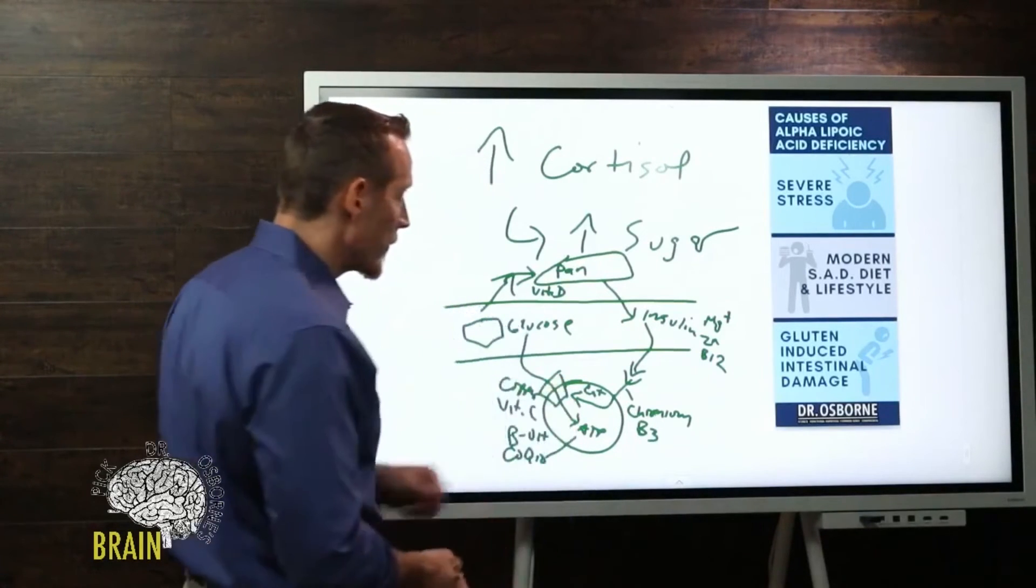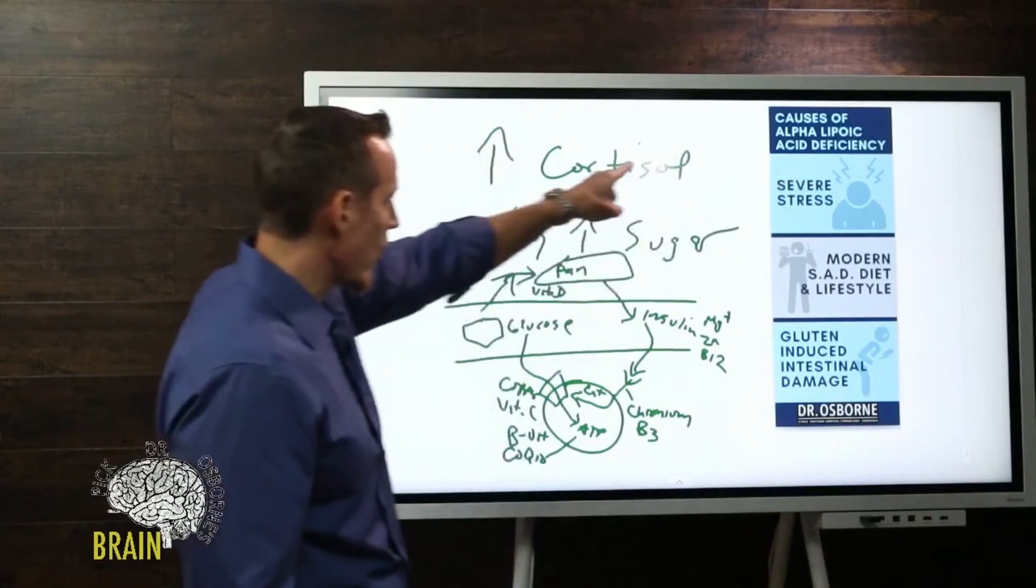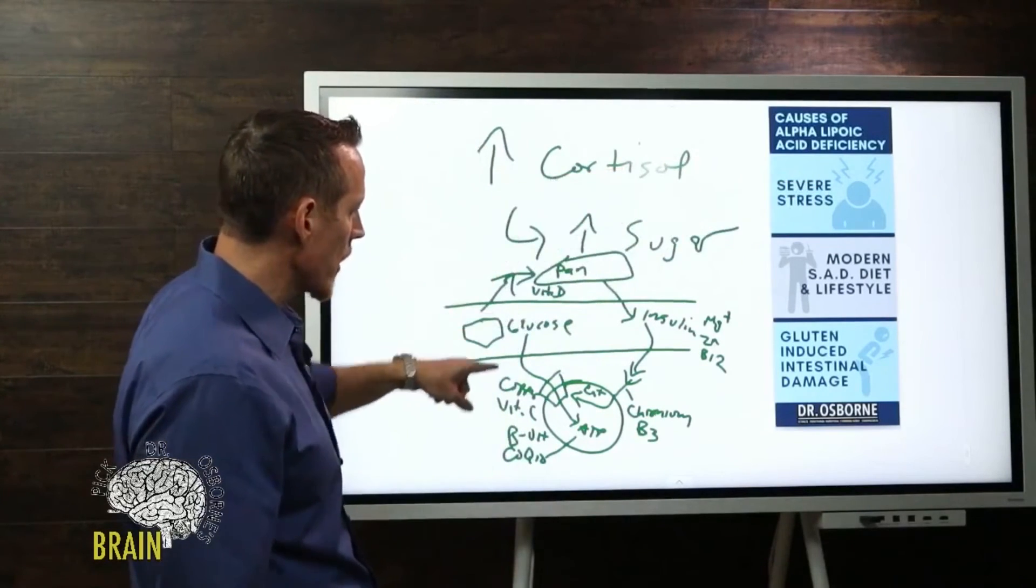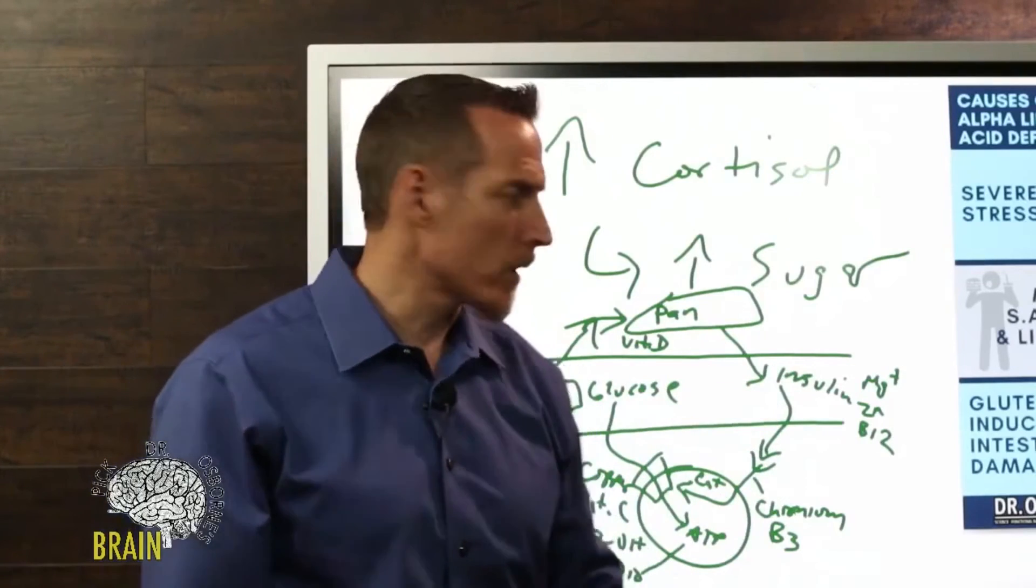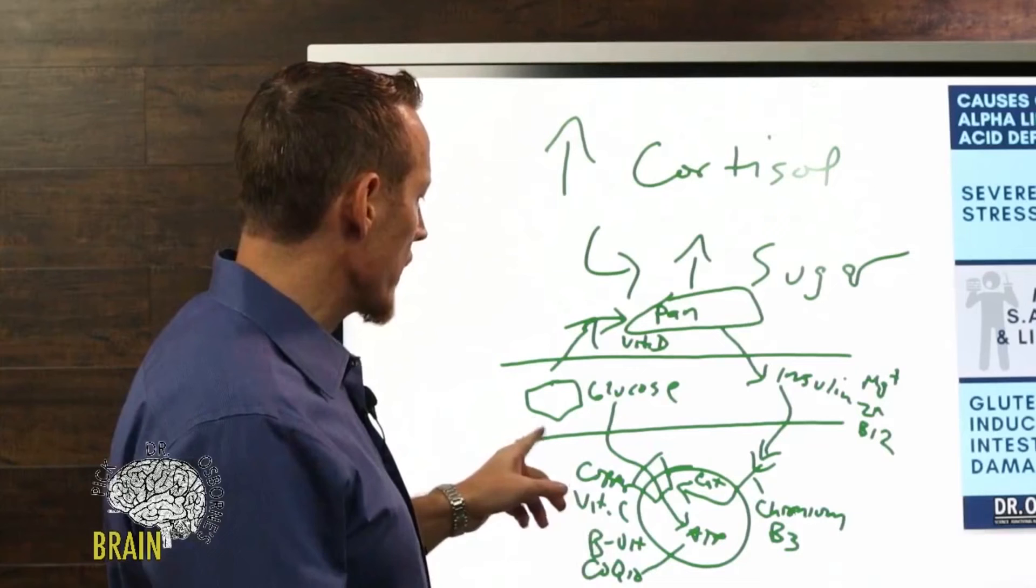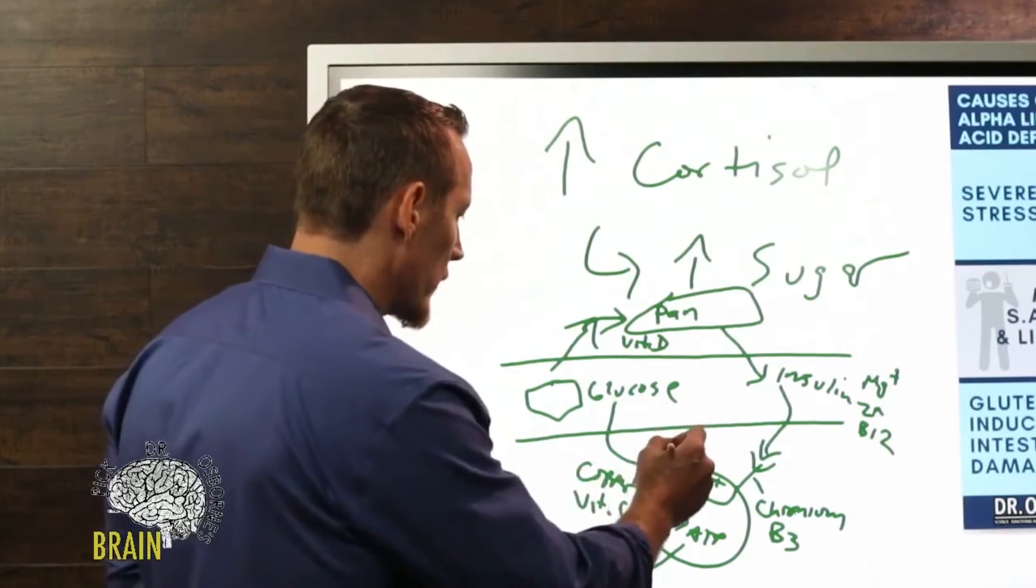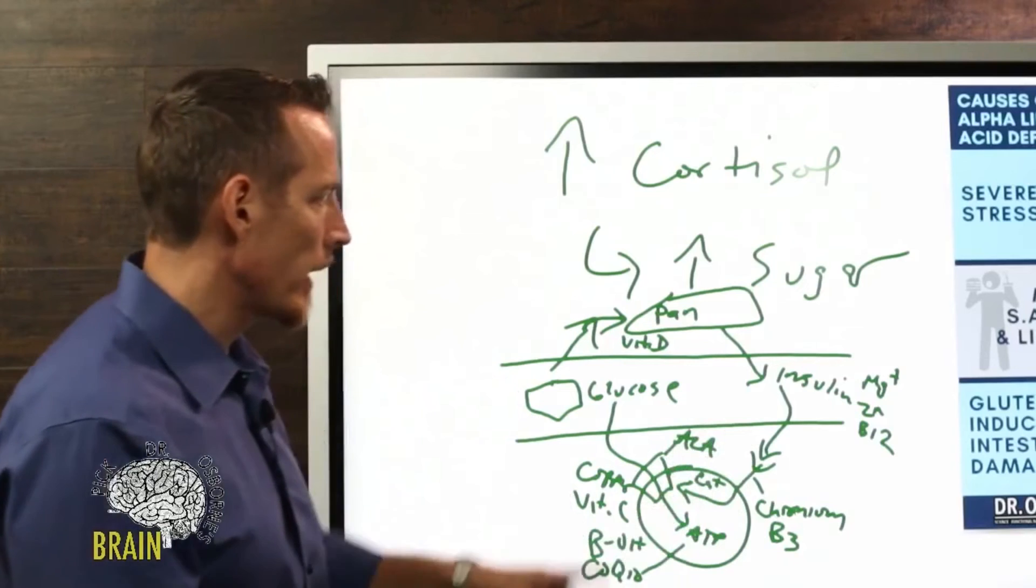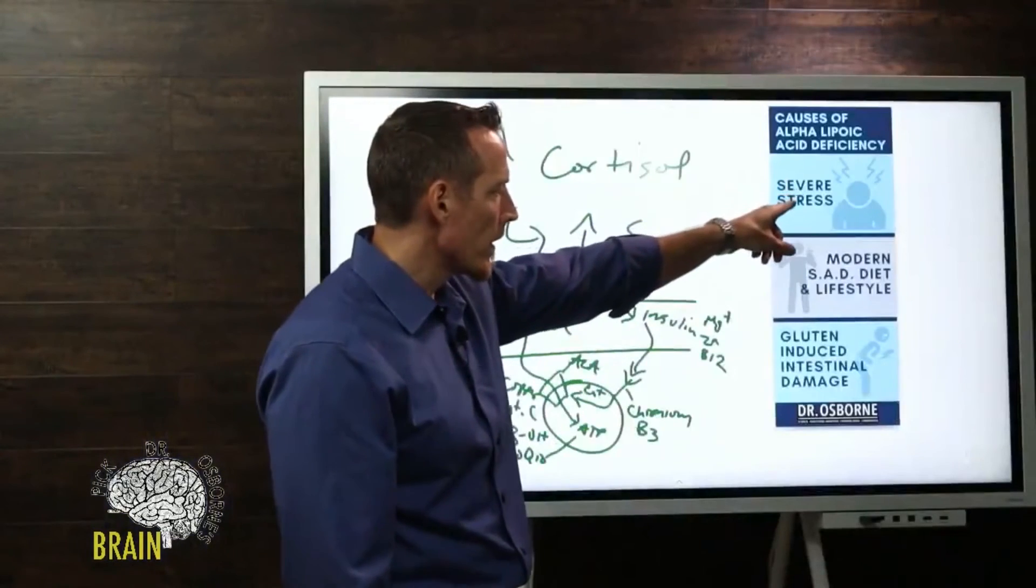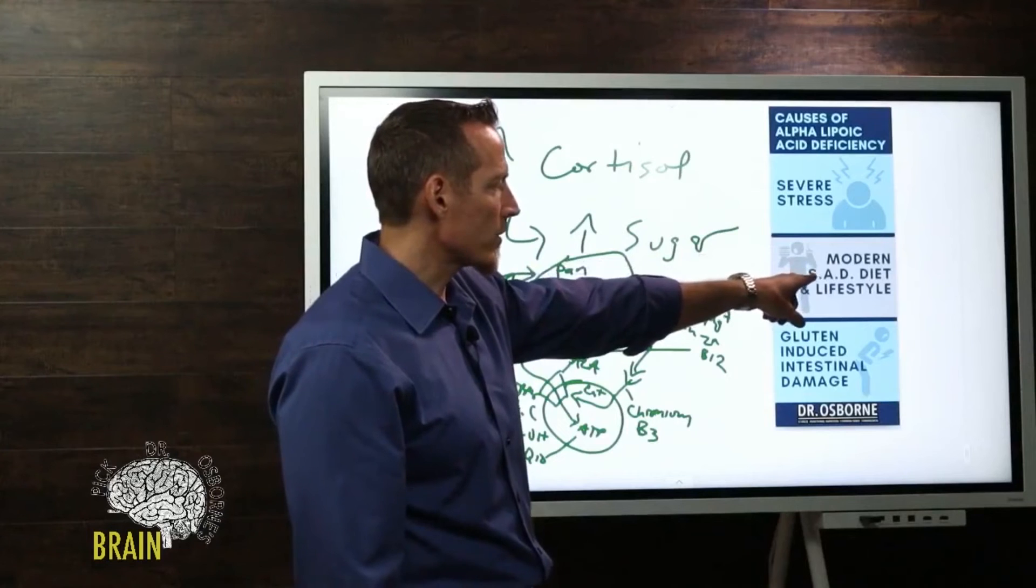If you're under that severe stress driving up cortisol, driving up sugar, you're burning through all of these vitamins and minerals at a higher pace to try to keep up with that increase in sugar. One of those nutrients is alpha lipoic acid - it helps the sugar get into the cell.